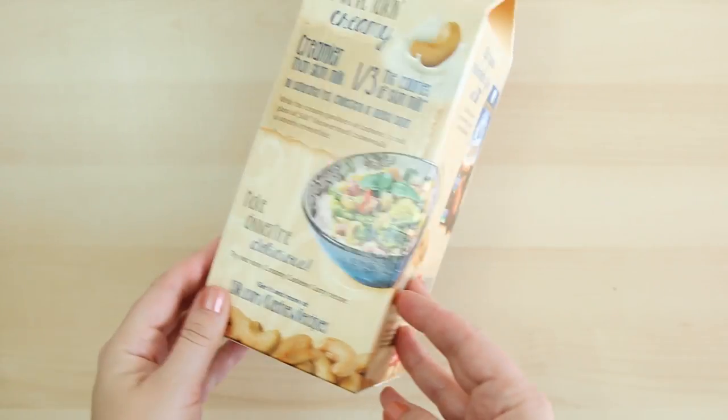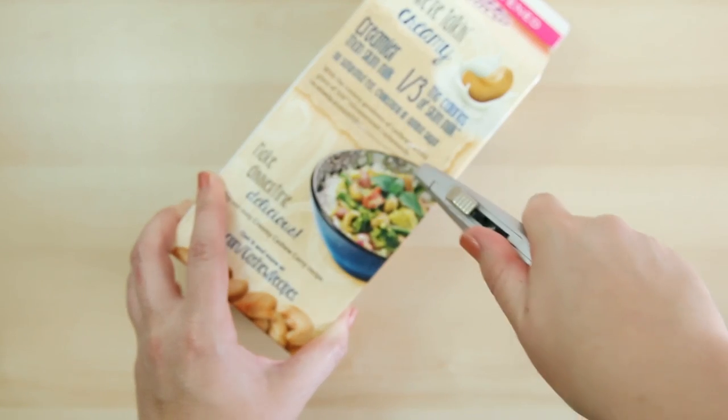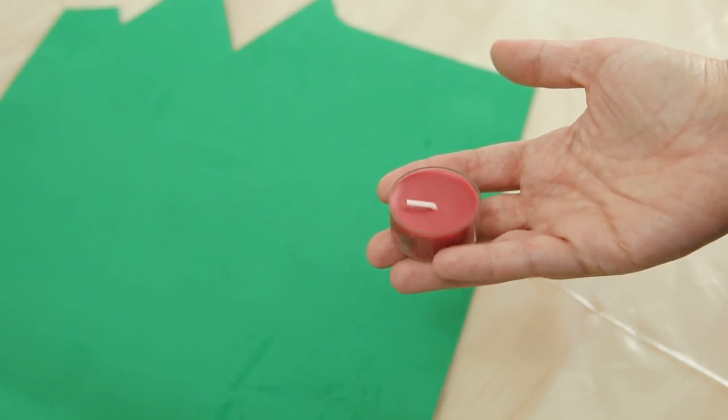Now for this next candle mold, I'm using an empty milk carton and cut the top off so that there's an easier opening to pour the cement in. To make the candle shape for the inside, I traced my candle onto a piece of craft foam and did this twice so that I can fit two candles into the holder.